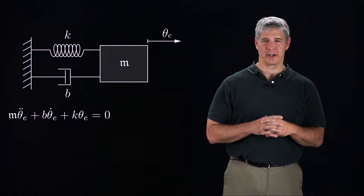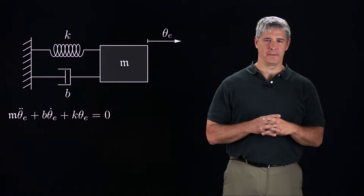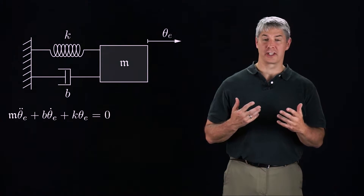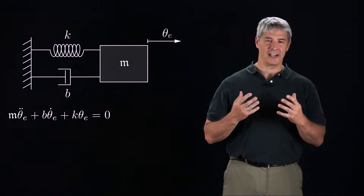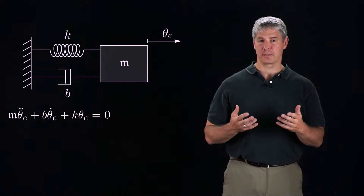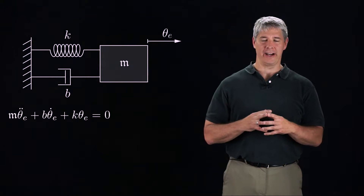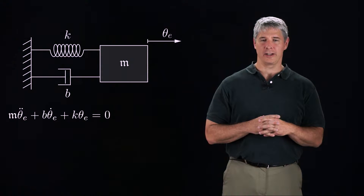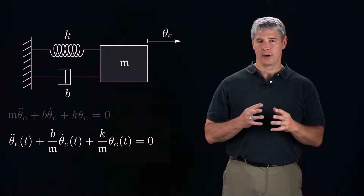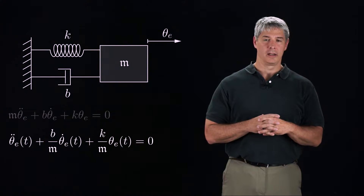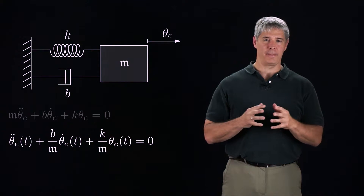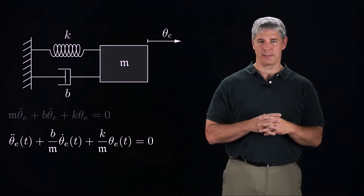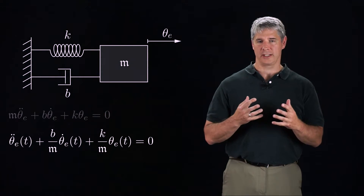Let's continue with our mass-spring-damper analogy for the error dynamics of a controlled single-joint robot. Design of the controller allows us to alter the spring k and damper b, and therefore how the error theta e evolves. We divide this second-order differential equation by the leading coefficient m to get this form, where the leading coefficient is 1. Assuming m, b, and k are all positive, the error dynamics are stable and the error will decay to 0.